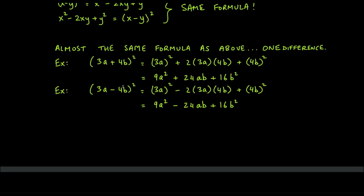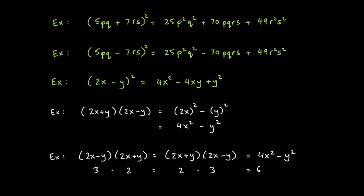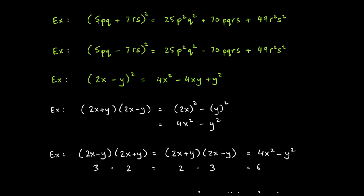This shows the real value of knowing these formulas and the methodology behind them — it saves enormous time and effort compared to foiling. Similarly, for (5pq + 7rs)² we found 70pqrs as the middle term. For (5pq − 7rs)², just change that sign to −70pqrs.